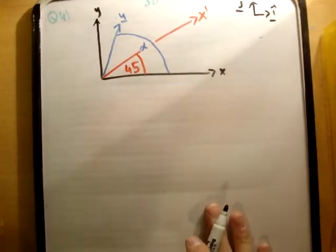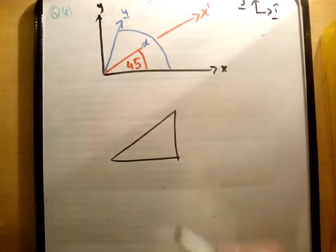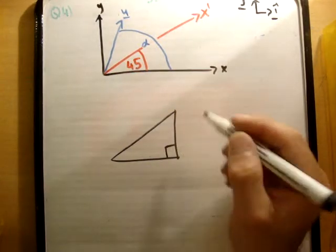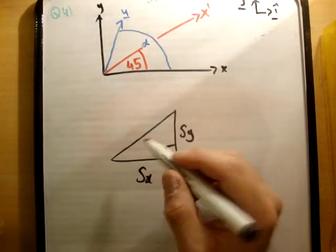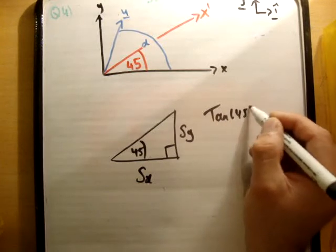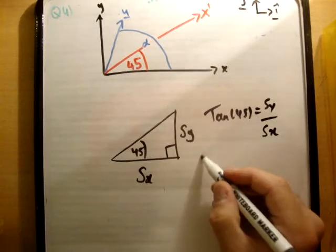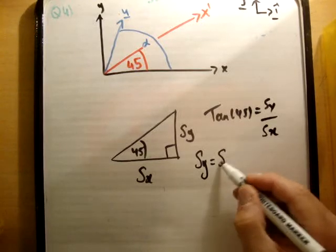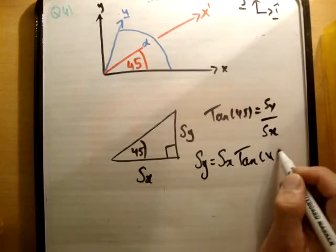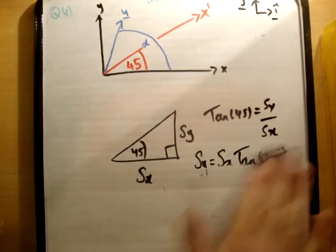So what I'm going to do instead is this. If this is my incline and this is my x axis here, when the particle has finished its motion, it will have created a right triangle like so. Where this is s sub y and this is s sub x and this is 45 degrees. So the tan of 45 is equal to s sub y over s sub x. Therefore s sub y is equal to s sub x tan 45. Now the tan of 45 happens to be 1, but we'll leave that out for a moment.